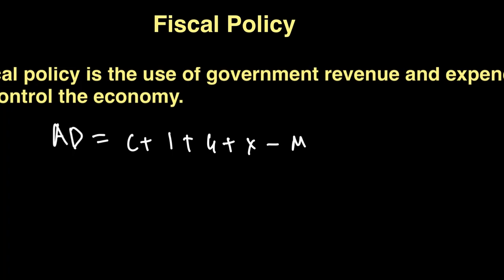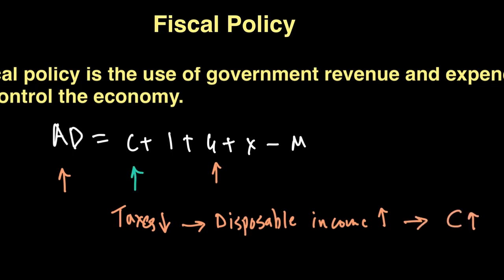So whenever the government expenditure go up, we know this AD curve will go up. At the same time, if the government reduces taxes in an economy, then the disposable income go up and that can in turn result in consumption to go up. Furthermore, if the government is reducing taxes on firms, it can also make firms to invest more so I can go up.